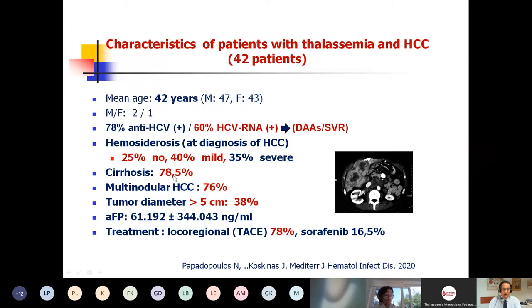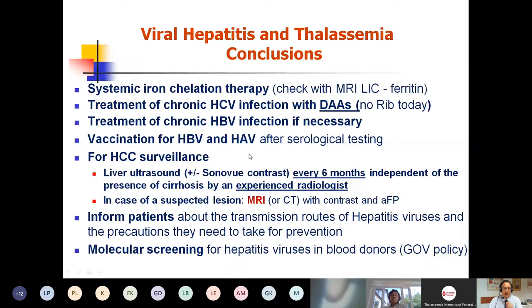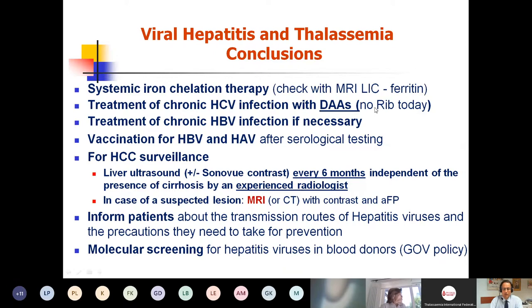How important is iron chelation therapy in this population? Not all HCC patients are cirrhotic. The multinodular HCC presentation and tumor diameter in our patients further underscores the complexity. In conclusion, for viral hepatitis and thalassemia: we should enforce systemic iron chelation therapy, checking effectiveness with MRI liver iron concentration and ferritin levels. We must treat every thalassemia patient with hepatitis C using the new antiviral drugs without ribavirin — very effective, no side effects, short duration. Chronic hepatitis B infection should be treated if there is viral replication or liver disease.